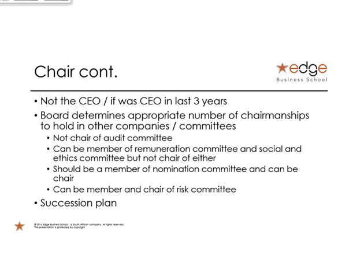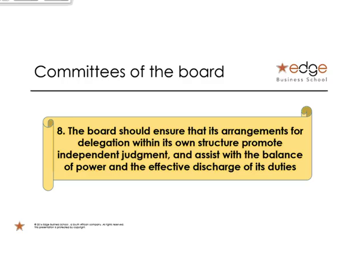Principle 8: Committees. Very much integrated with the Companies Act, especially for two of the committees. In King 3 they recommended four committees; in King 4 they recommend five. The additional one is the social and ethics committee, which is also in line with the Companies Act — because the Companies Act only talks about the audit committee and social and ethics committee. King now talks about those two as well, plus their own other three.